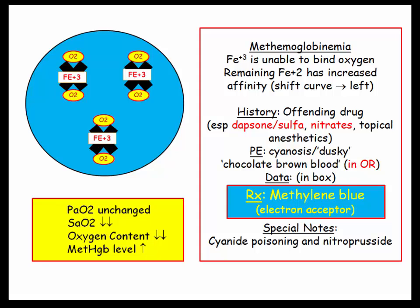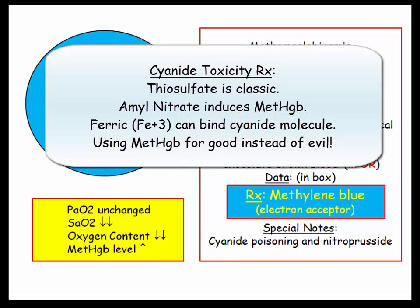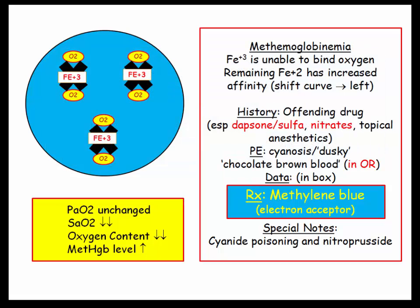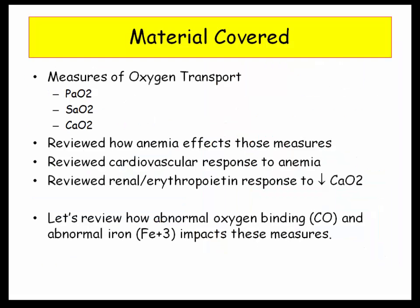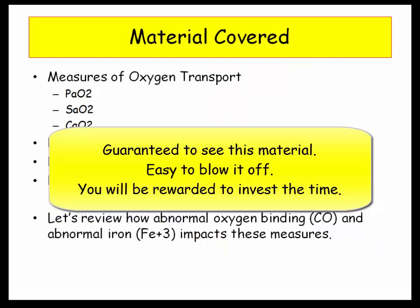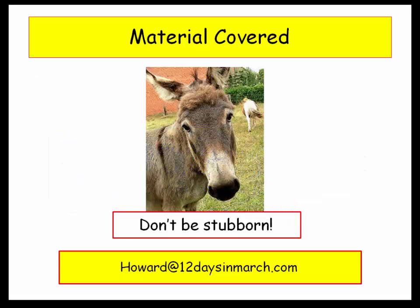Just an aside: when discussing nitroprusside, we mentioned cyanide poisoning, for which thiosulfate is the usual treatment. Be aware that inducing methemoglobinemia with amyl nitrate can also be part of the treatment regimen, as the ferric form of iron binds cyanide. In this two-part section, we presented material that you will be guaranteed to see. It is easy to blow off, but you'll be rewarded for investing the time. This stuff is gold. If you have any questions or concerns, feel free to email me at 12daysinmarch. Thank you.